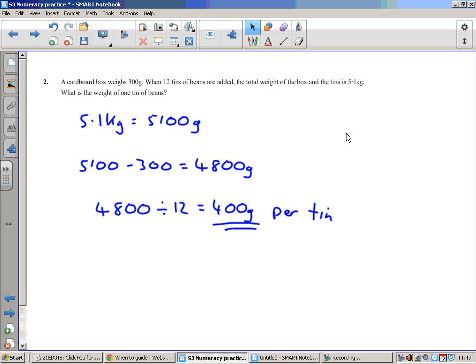Number two: A cardboard box weighs 300 grams. Put 12 tins of beans in it, the total weight will be 5.1 kilograms, which is the same as 5,100 grams. A kilogram is 1,000 grams. So let's remove the weight of the box, so all of the beans would be a total weight of 4,800 grams. There are 12 tins, I'm assuming they're all the same size, so 4,800 divided by 12, each tin is 400 grams.